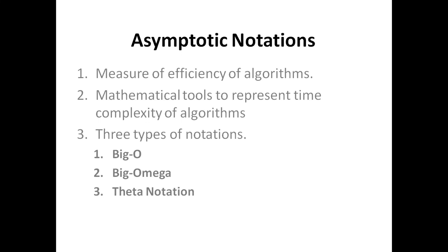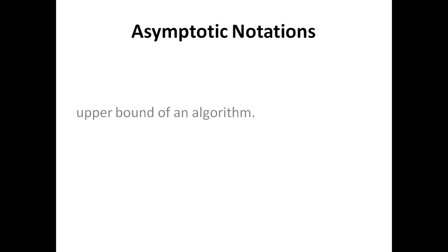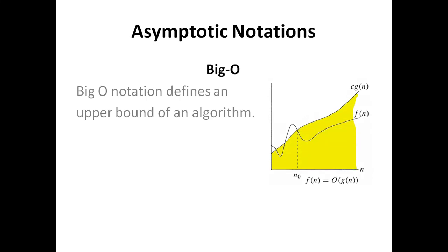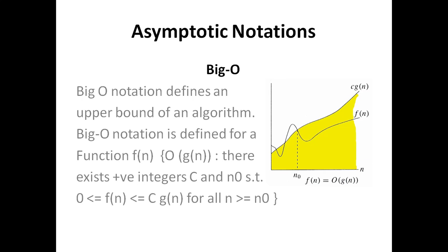We are going to discuss all three notations with examples. Starting with Big O notation — Big O notation defines an upper bound of an algorithm. The execution time of the algorithm will never go higher than the Big O notation. If we have a function f(n) representing the complexity of your algorithm,